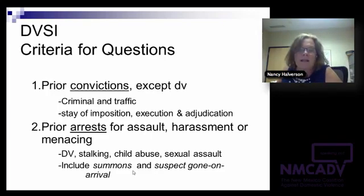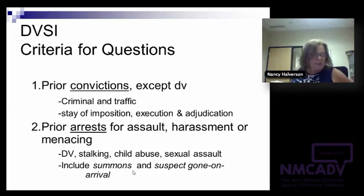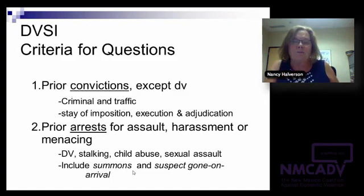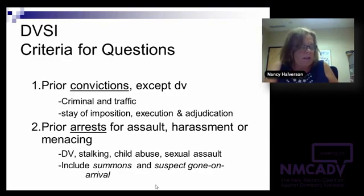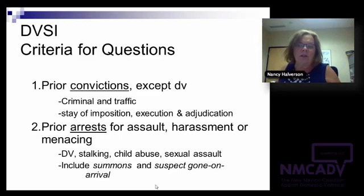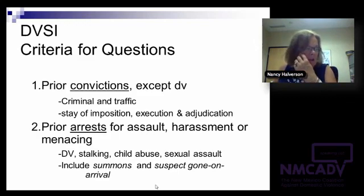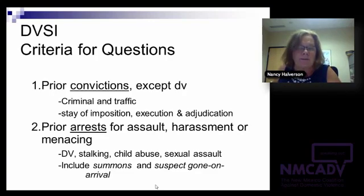Most of these items have a couple of different scoring options — it would be zero for nothing apparent, then one, two, or in some cases three points — based on the correlation to risk. Those are the first two of the 12 items.